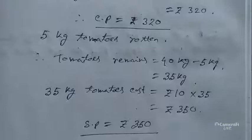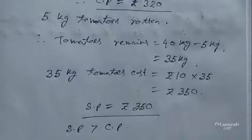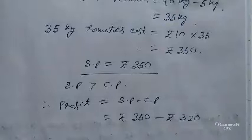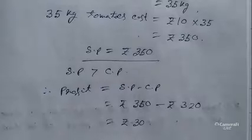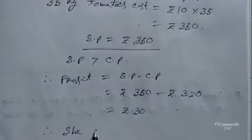Therefore profit equals SP minus CP: rupees 350 minus rupees 320. Subtracting, we get rupees 30. This is the profit value. So how much profit did she get? She got a profit of rupees 30. This completes the problem.